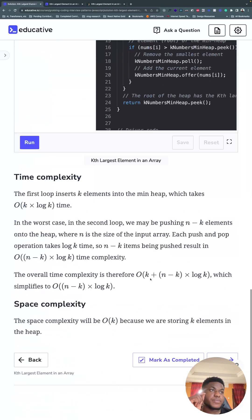Now, let's look at time complexity. So the first loop inserts k elements in a min heap, which takes k times log of k time. In the worst case, in the second loop, we may be pushing n minus k elements into the heap, where n is the size of the input array. Each push and pop operation takes log of k time. So n minus k elements being pushed into the result gives you this. Overall, time complexity is therefore O(k log k plus n minus k times log k), which simplifies to n log k, I would say.